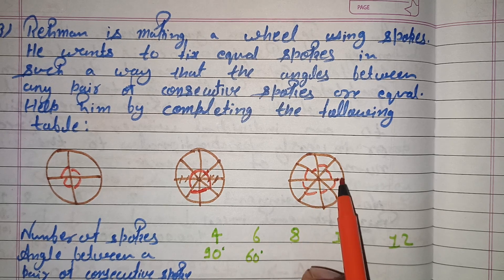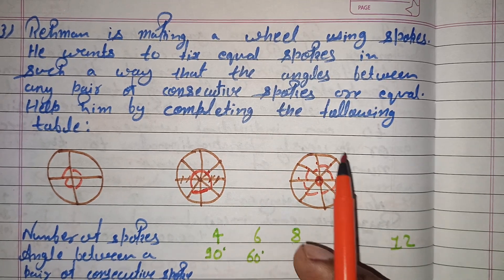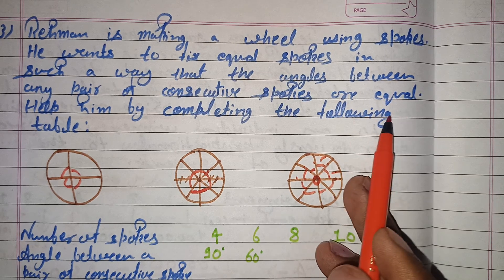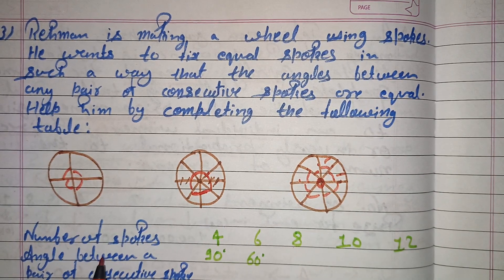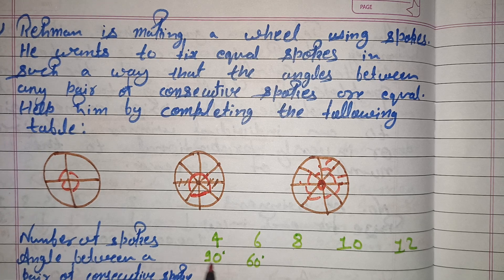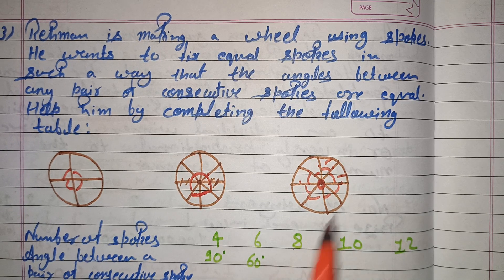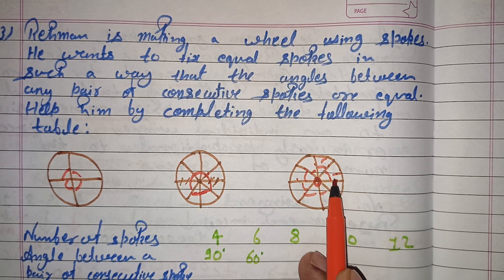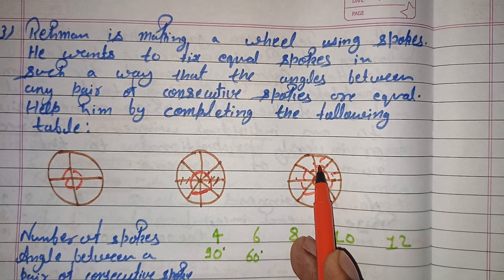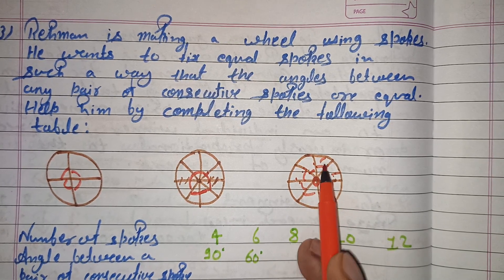We are given a table. The number of spokes are given, and we need to find the angle between pairs of consecutive spokes. A consecutive pair means two adjacent spokes — this pair, this pair, this pair — and the angle between each consecutive pair should be equal.